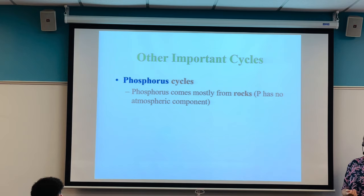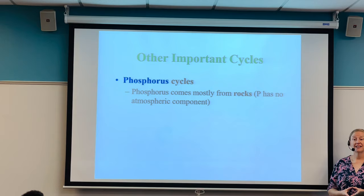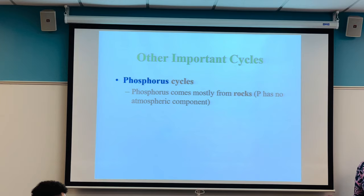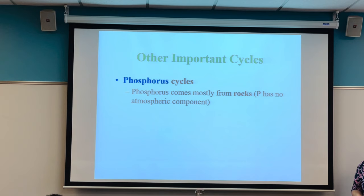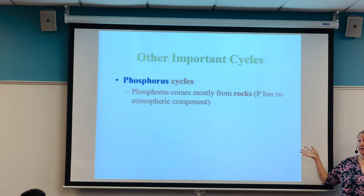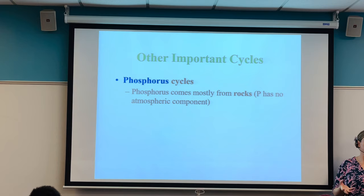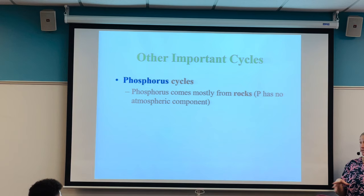Phosphorus is interesting because it doesn't have an atmospheric component — it is found in rocks. Rocks and soil are important because rocks themselves leach nutrients into soil. When I garden, I put rocks on the bottom of a pot because rocks have important atoms to give to the plant, and they also create space to aerate the soil, which helps with plant health.